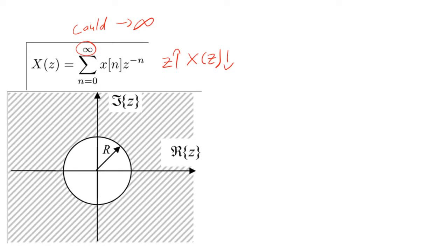Since Z is a complex number, we can plot the values of Z for which the transform will converge. Since Z will need to be large, as we just discussed, the transform will converge only for values of Z greater than some value, R.